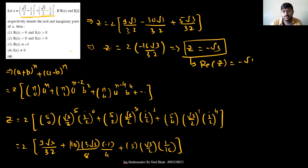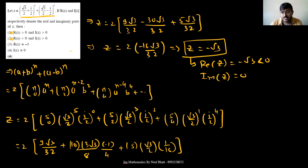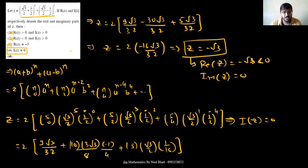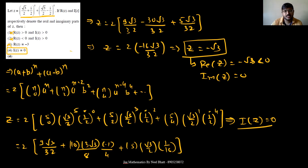Therefore, the real part of z equals −√3, which is less than 0, and the imaginary part of z equals 0. Checking the options: real part > 0 is not possible; real part < 0 is correct but the imaginary part differs; real part = −√3 can be cancelled. So the answer is D: imaginary part equals 0. If you notice i^0 and i^4 terms only appear, you can directly state the imaginary part must be 0.